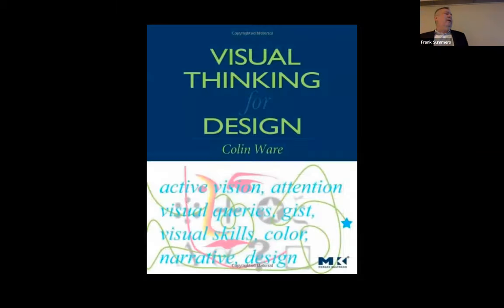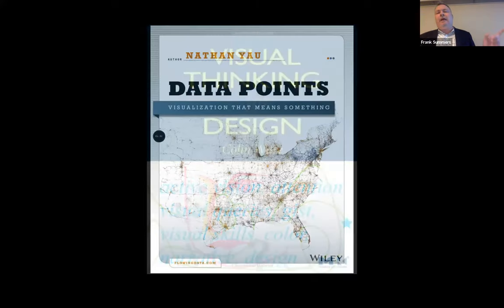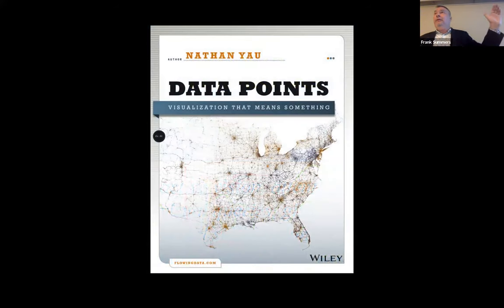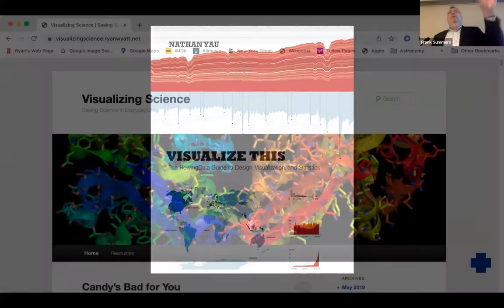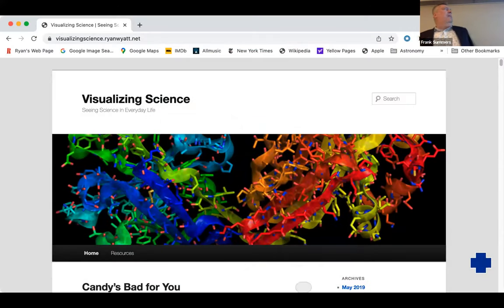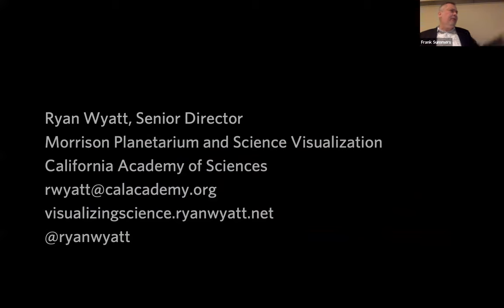A couple more books: Colin Ware's Visual Thinking for Design — he has a big thick book, but this is the thin one, a great reference to help you think about visual representations. And two of Nathan Yau's books: Data Points, which is a good general introduction, and Visualize This, which goes into more nitty-gritty details and actual examples of code. I have a resources tab on my Visualizing Science page at visualizingscience.rightway.net where all of those are listed, so you can go there for references to all those books.